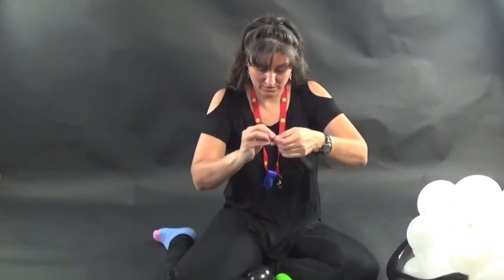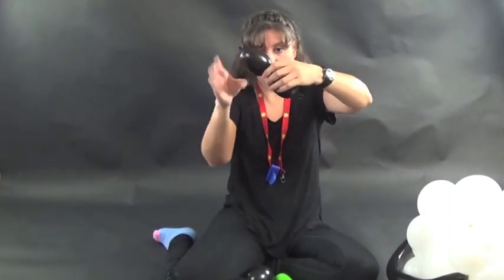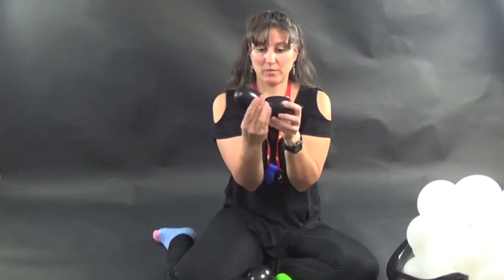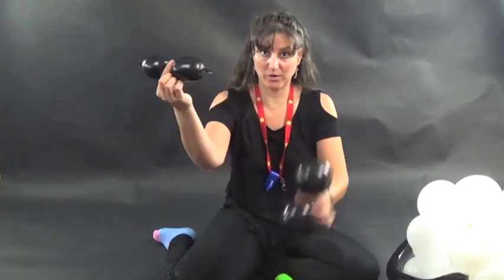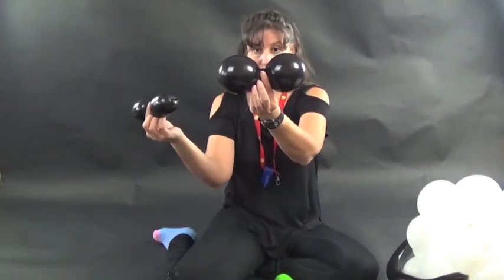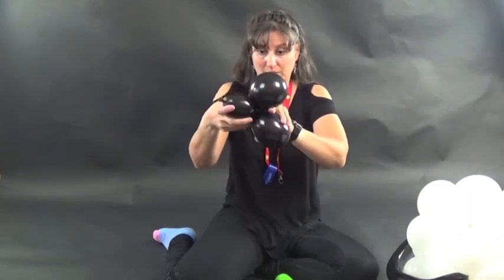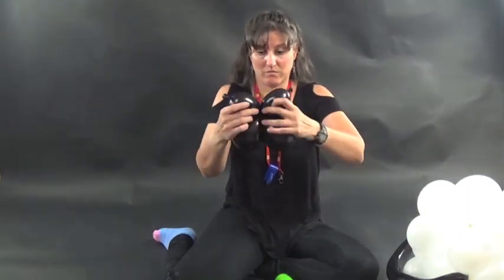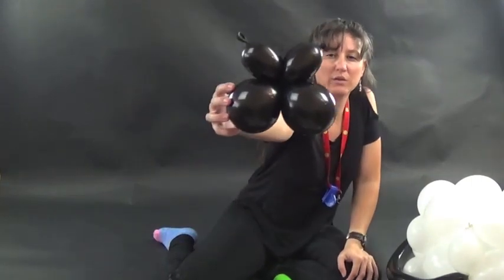Now put that twist back in the middle so you have two four finger bubbles. You're going to take these two bubbles and you're going to twist them around these two black five inch rounds. So that creates one eyeball.